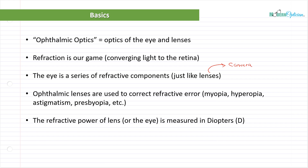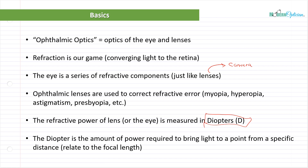Refractive power of lenses or the eye is measured in a unit called diopters. I want you to really pause on the idea of diopters, because from this moment forward, every unit of power — unless otherwise specified — is the diopter. If you're new to optics, you might be new to this concept. The diopter is the amount of power required to bring light to a point from a specific distance — it's related to the focal length.